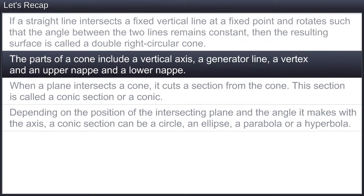The parts of a cone include a vertical axis, a generator line, a vertex, and an upper nappe and a lower nappe.